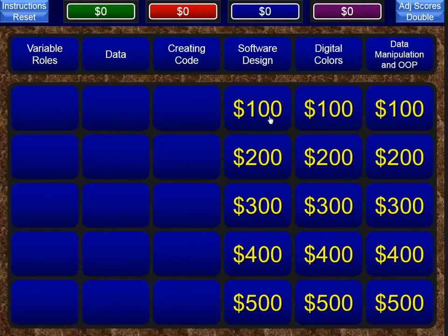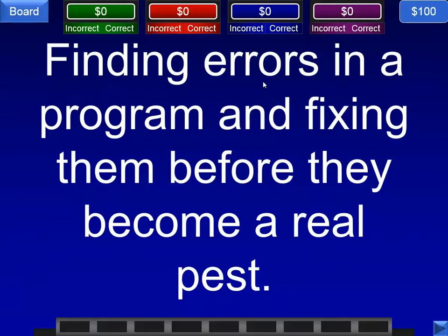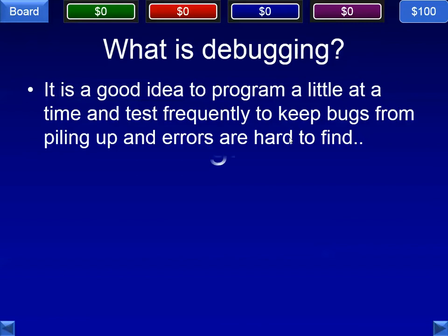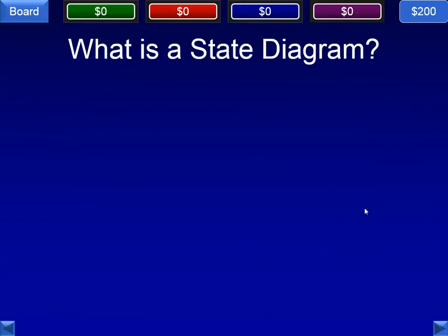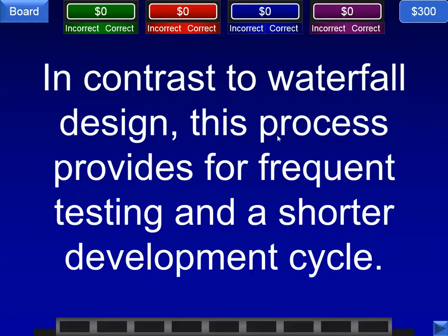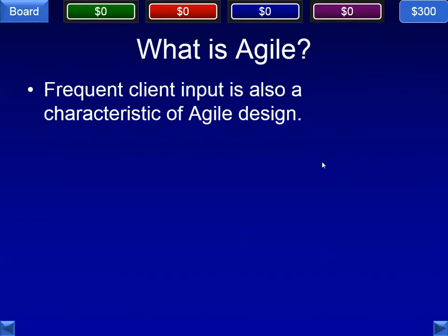Next category is software design. Finding errors in a program and fixing them before they become a real pest — we're talking, of course, about debugging. This shows the status of a program and where it can go next — we are talking about a flow diagram, state diagram, or flow chart. In contrast to waterfall design, this process provides for frequent testing and a shorter development cycle — we're talking about the agile design process. Frequent client input and lots of feedback loops are also characteristics of agile design.